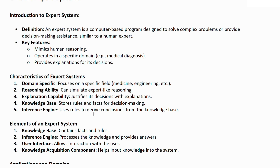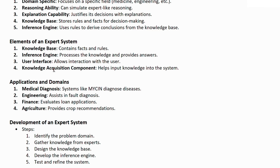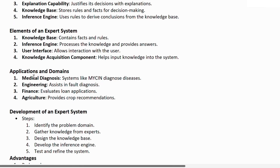Some elements of an expert system: first, knowledge base — contains facts and rules; then inference engine — it processes the knowledge and provides answers; the third one, user interface — allows interaction with the user; and the fourth, knowledge acquisition component — helps input knowledge into the system.